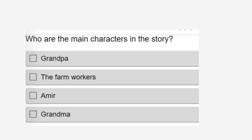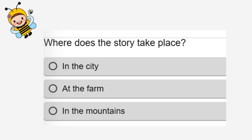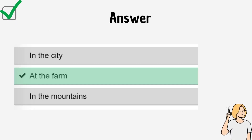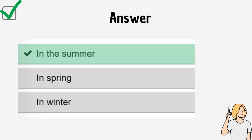Who are the main characters in the story? Grandpa, the farm workers, Amir, Grandma. Look at the answer. Where does the story take place? At the farm, in the mountains, in the city. Look at the answer. When does the story take place? In spring, in winter, in the summer. Look at the answer.